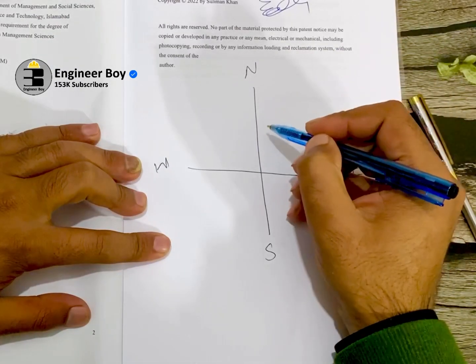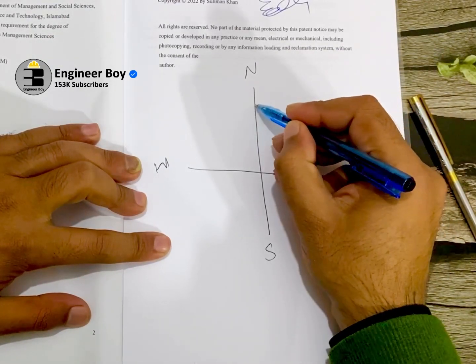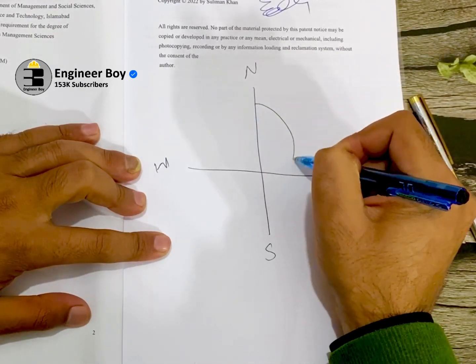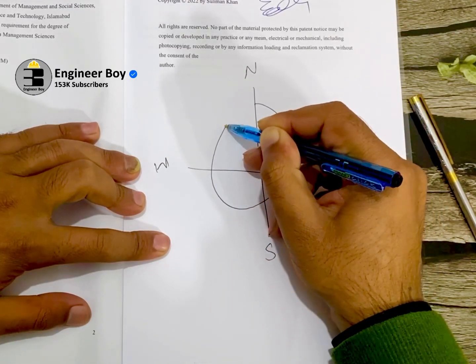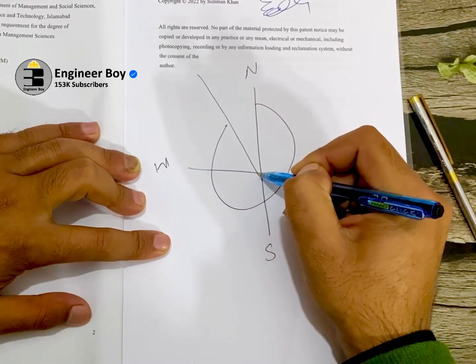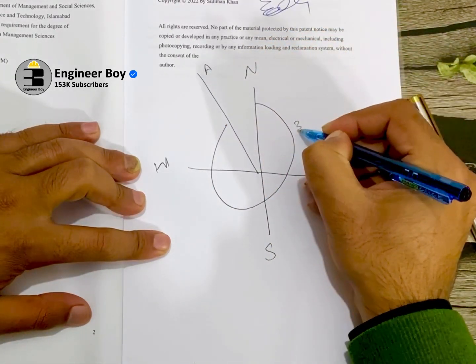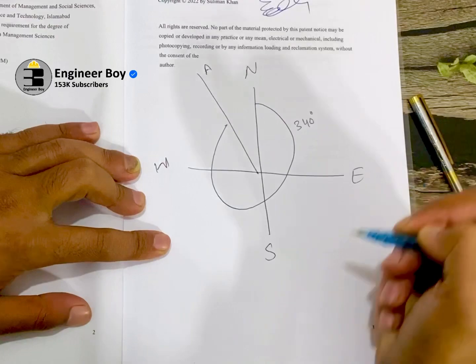Now, line A, that is 340 degrees. That's the whole circle bearing, so I'm going to start from the north. It's going to go like that. Now, this is the line A, and this is actually 340 degrees.